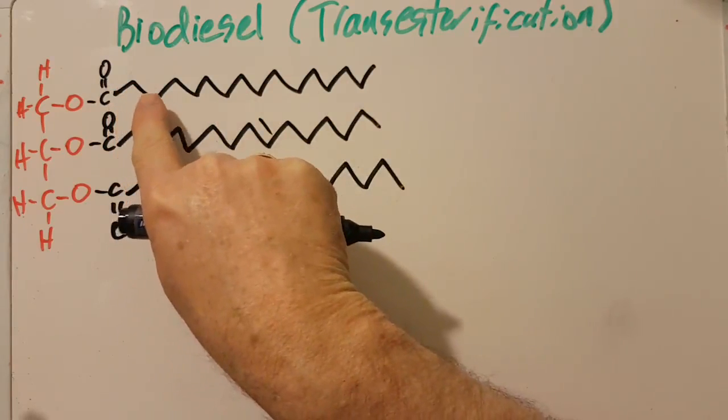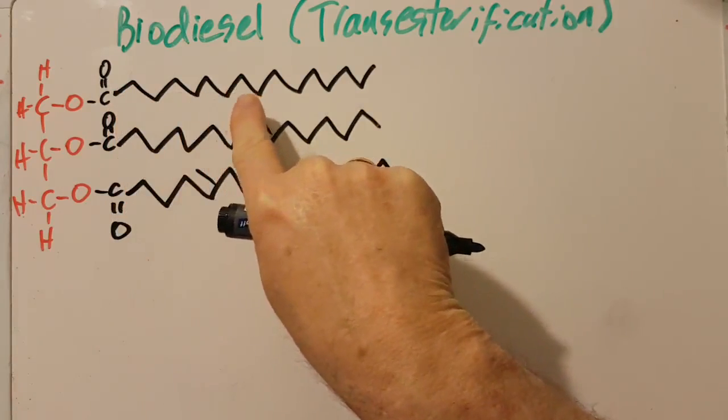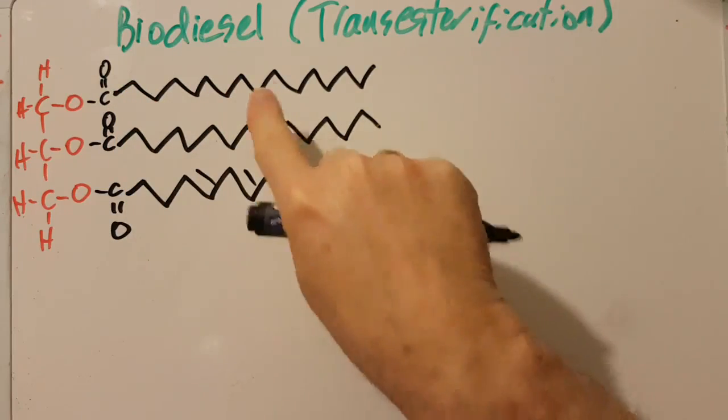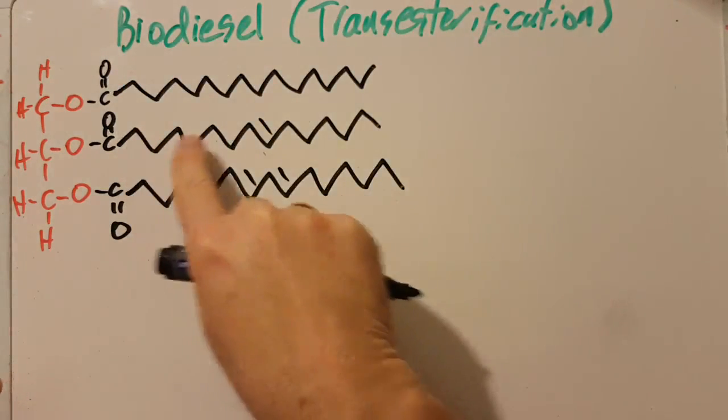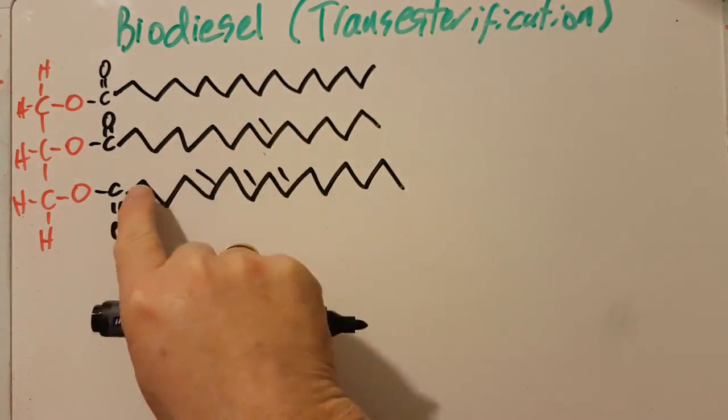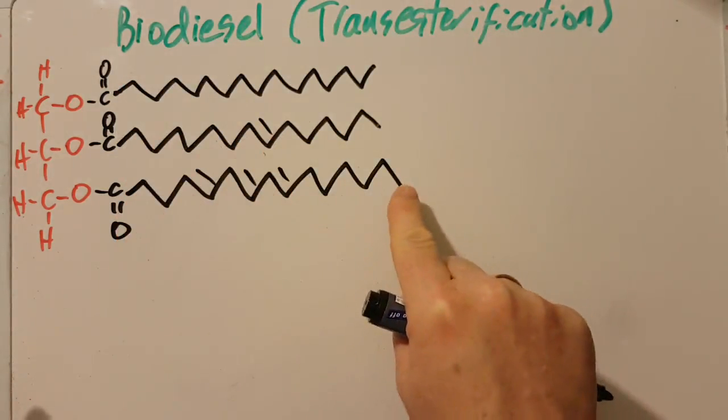This one's saturated. It has no carbon-carbon double bonds, just carbon-carbon single bonds. It's saturated. There's no room for hydrogen to go on there. But this is slightly unsaturated, and this is even more unsaturated here.